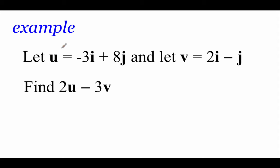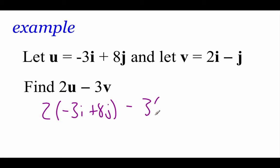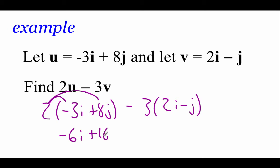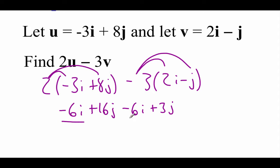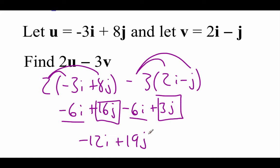In this example, we've got vector u as negative 3i plus 8j, and vector v as 2i minus j. We're going to figure out what 2u minus 3v is. For 2u, we take 2 times negative 3i plus 8j, then subtract 3 times 2i minus j. Distributing the 2 gives negative 6i plus 16j. Distributing the negative 3 gives negative 6i plus 3j. Combining like terms: negative 6i plus negative 6i is negative 12i, and 16j plus 3j gives 19j. So our new vector is negative 12i plus 19j.